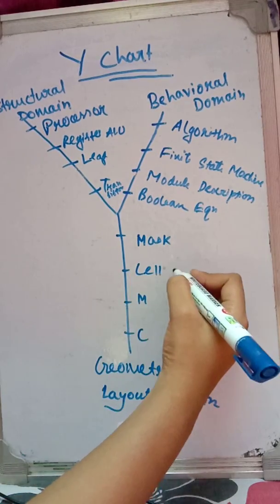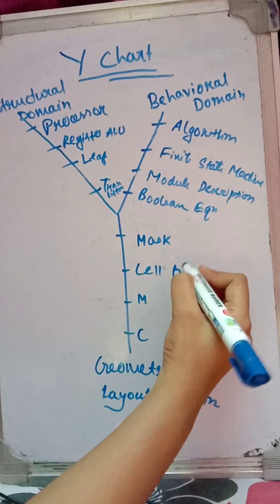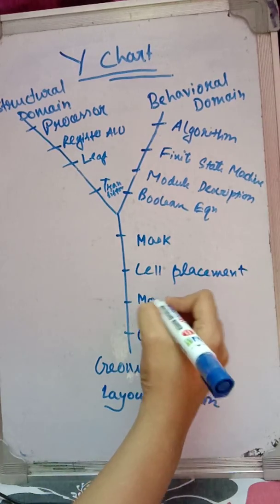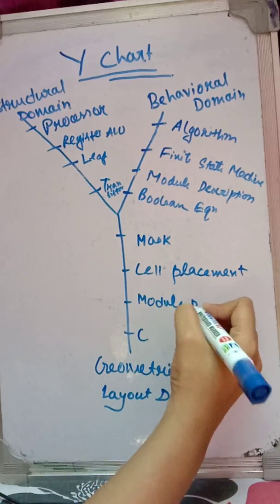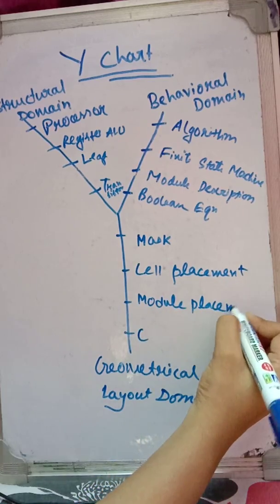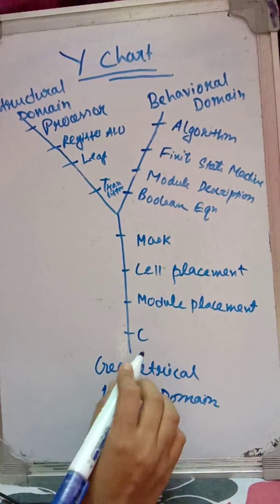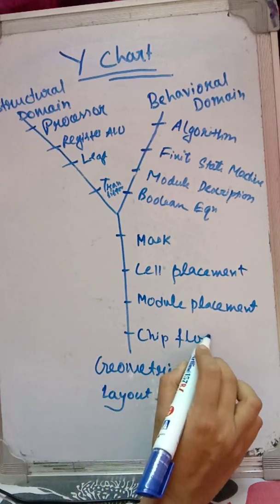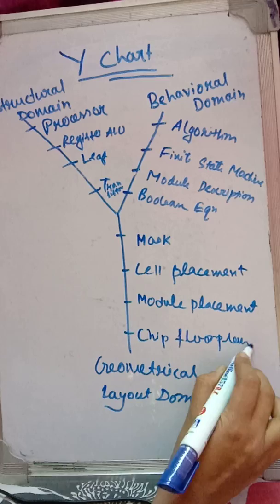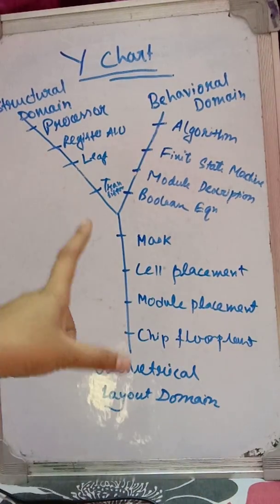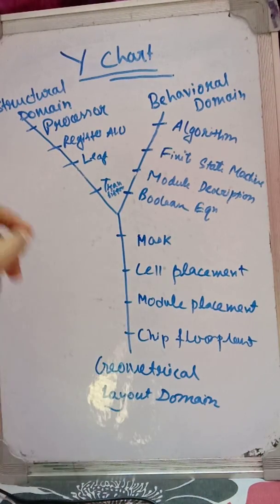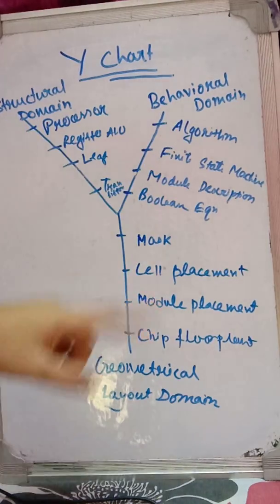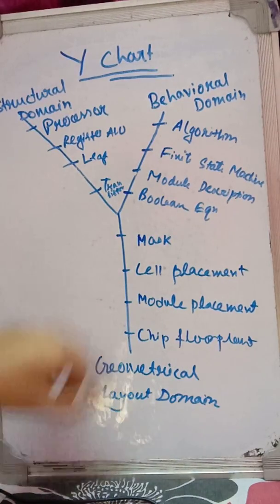For the geometrical layout domain: M is for Mask, C is for Cell Placement, M is for Module Placement, and C is for Chip Floor Plan. These are the 12 levels across the three domains of the Y-chart.